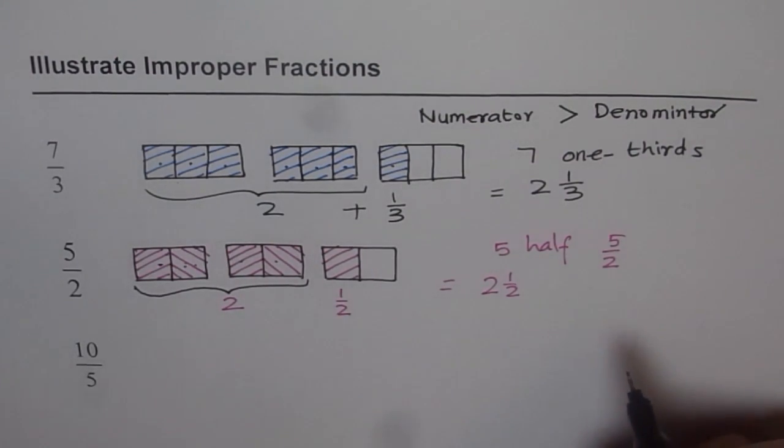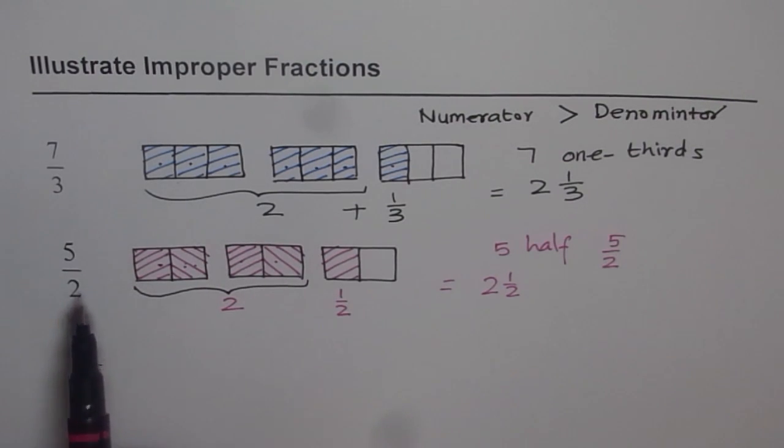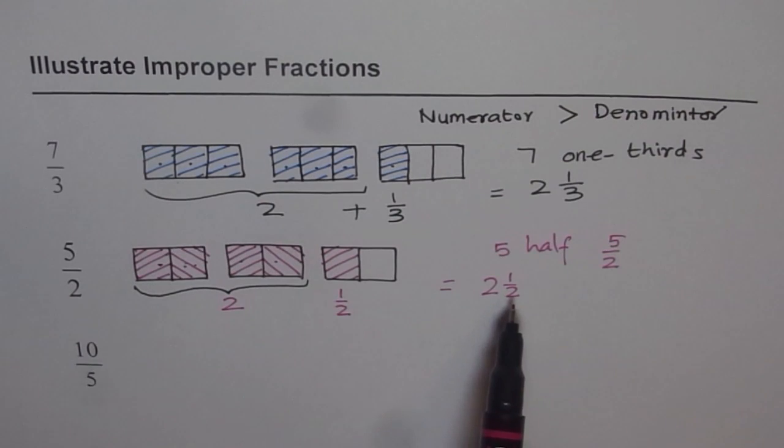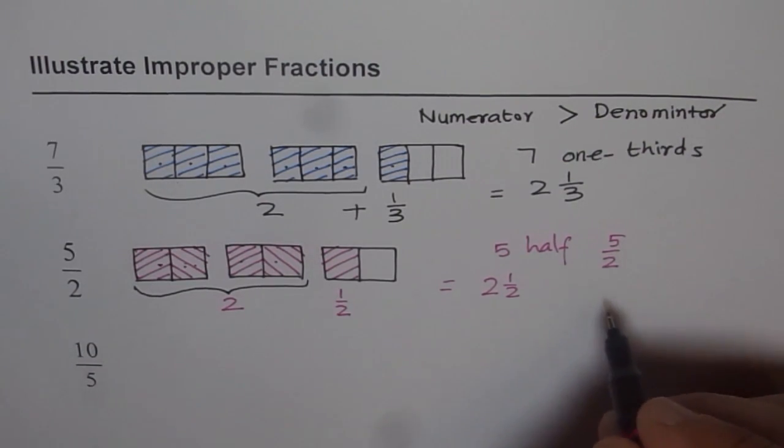So that is how you can write this improper fraction as a mixed number. So we have 5 halves.